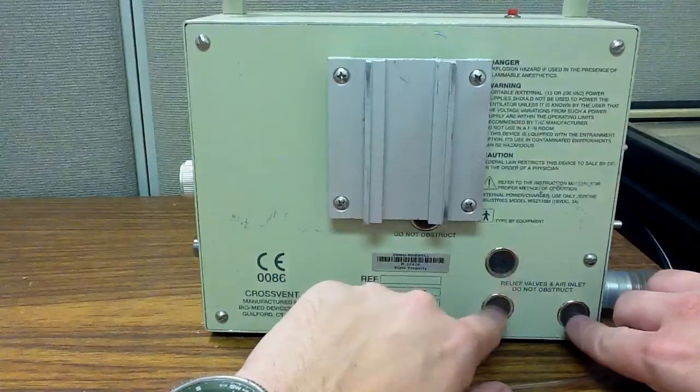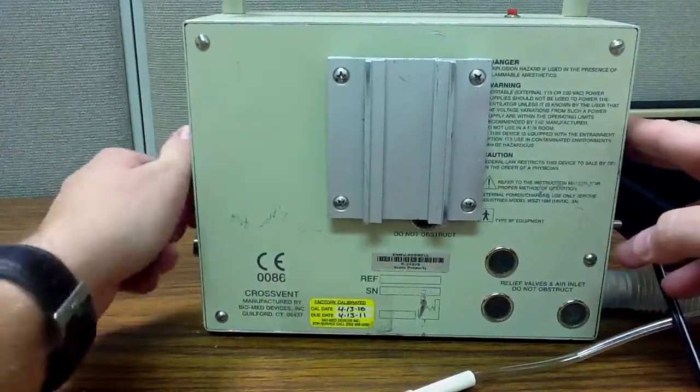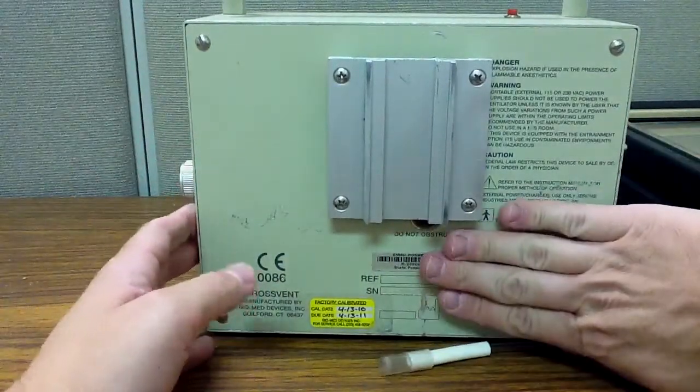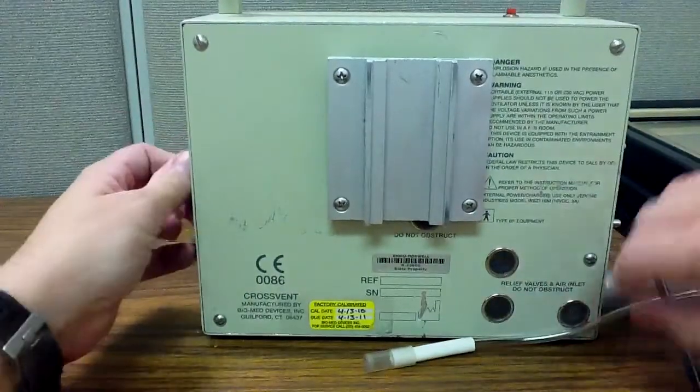And these are air inlet valves as well for entraining air when I have the air entrainment turned on. You don't want to block those, otherwise you can cause problems with FiO2 delivery.